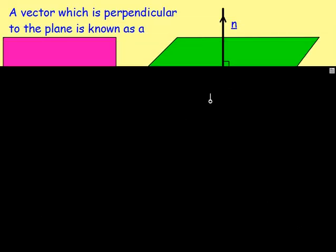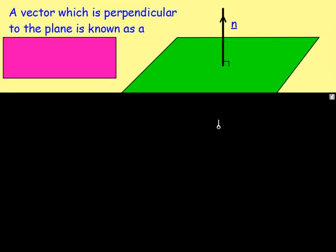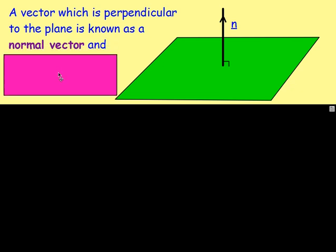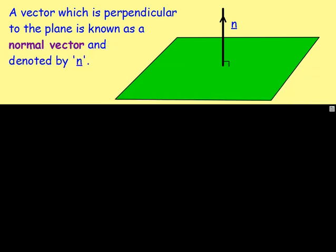Let's say we have a vector that is perpendicular to that plane, as shown by this diagram. That vector that's perpendicular is known as a normal vector, and it's written just with the letter N.